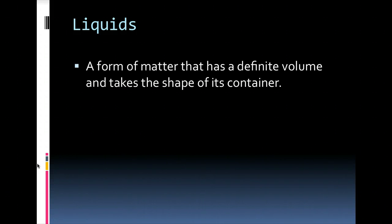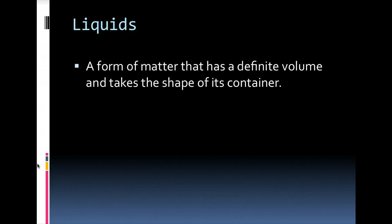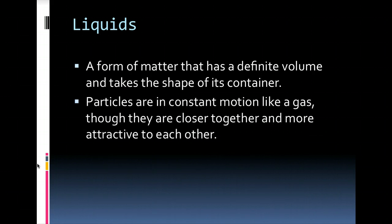Now, what we will do is we'll start focusing on liquids. That's what this chapter, liquids and solids, is all about. So liquid, we know, is a form of matter that has a definite volume. That means it's defined, and it does take the shape of a container. So if you have 40 milliliters of water and spill it, the 40 milliliters will stay the same, but it will take on a new shape. The particles in a liquid are in constant motion, just like a gas. However, they are closer together, and they are more attracted to each other.